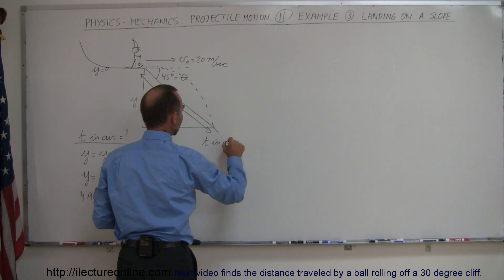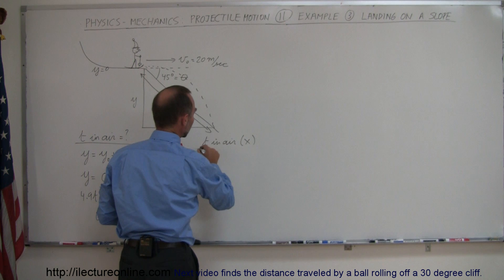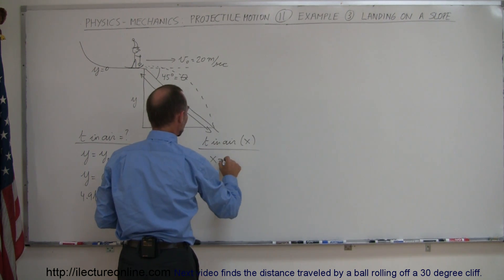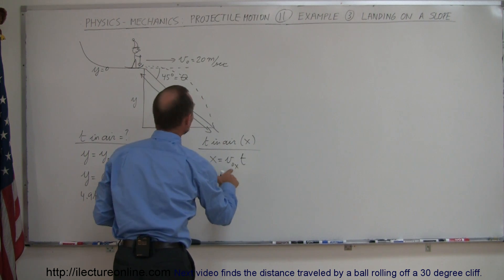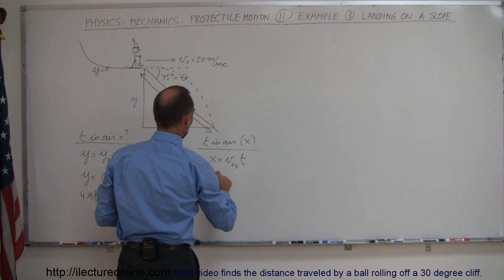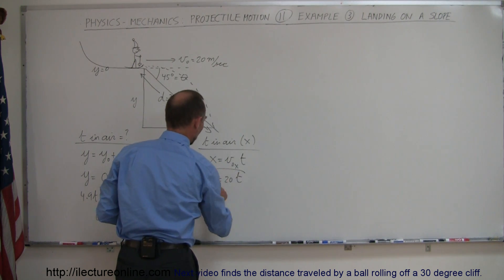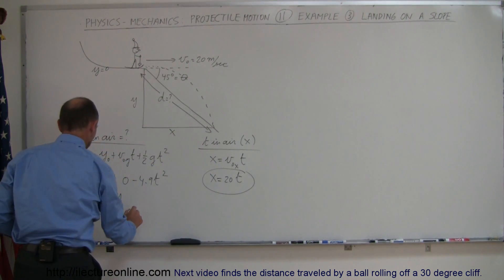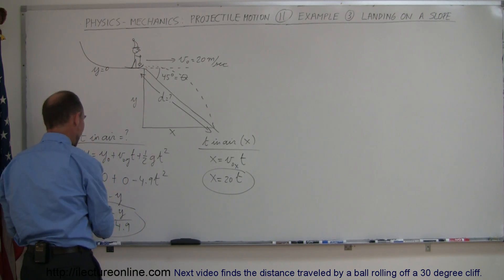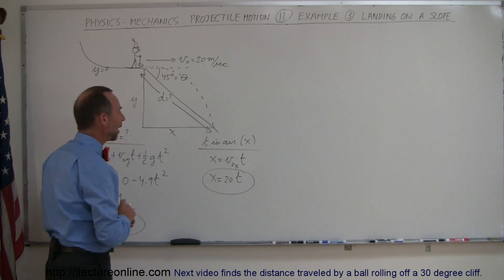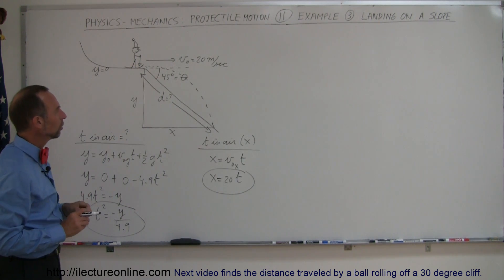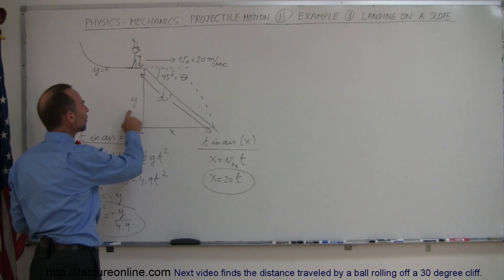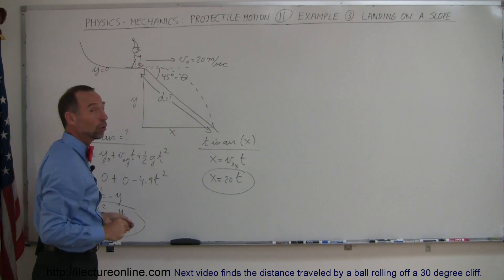So time in the air using the x direction, we have x is equal to v initial in the x direction times time. Of course the v initial in the x direction is known, so x is not known, so we have x is equal to 20 t. So now realize we have one equation and we have a second equation where time is related to either x or y. Now since the slope is a 45 degree angled slope,